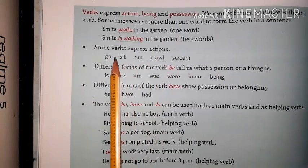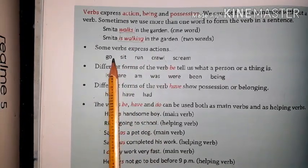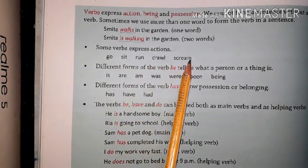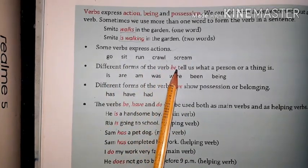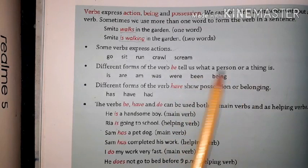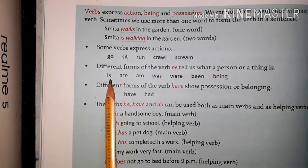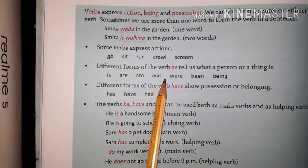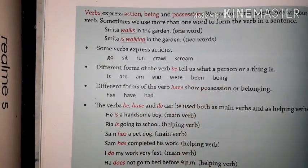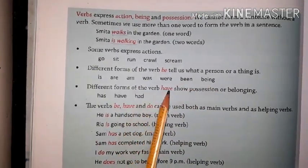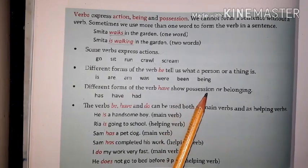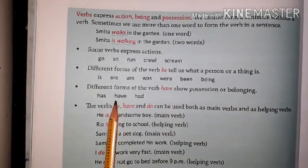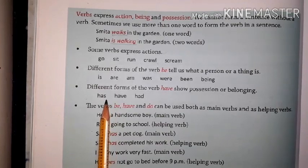Some verbs express action, like go, sit, run, crawl, scream — they are main verbs. Different forms of 'be' tell us what a person or thing is, and they represent being: is, am, are, was, were, been, and being. And different forms of the verb 'have' represent position or belonging.